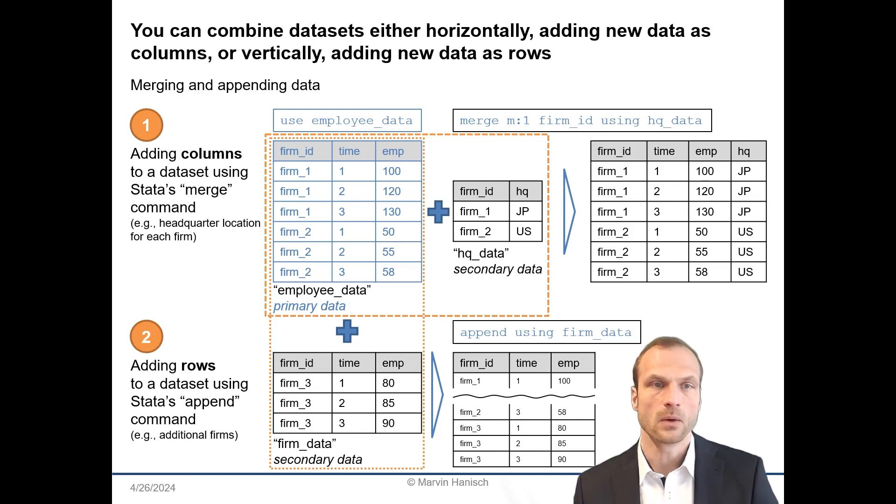To this dataset, I want to add headquarter information from another dataset called HQData. Each firm ID in the secondary dataset has an additional variable with the headquarters location. I could theoretically add this information manually in Excel, but this is likely to be error-prone and tedious. In Stata, you can combine these two datasets using the unique firm ID that exists in both datasets.